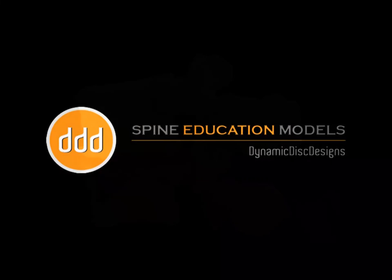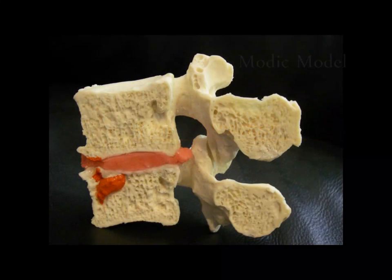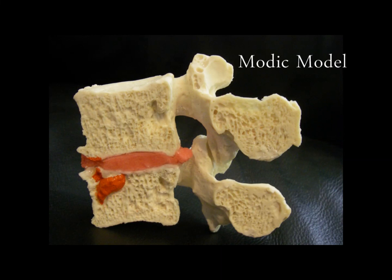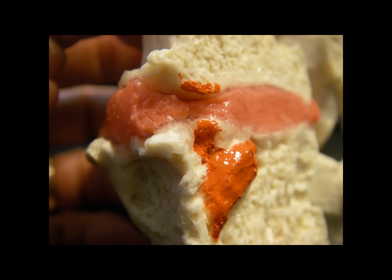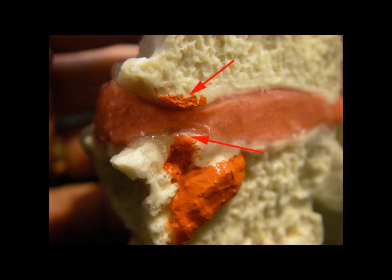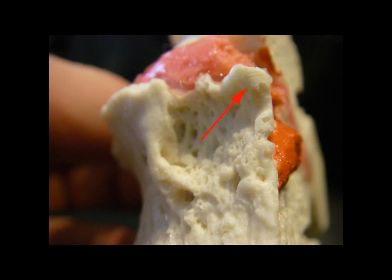Dynamic Disc Designs introduces Modic modeling, seen here in a mid-sagittal section through a degenerative specimen, exposing a Type 1 Modic specimen with fibrovascular tissue and osteophytosis.